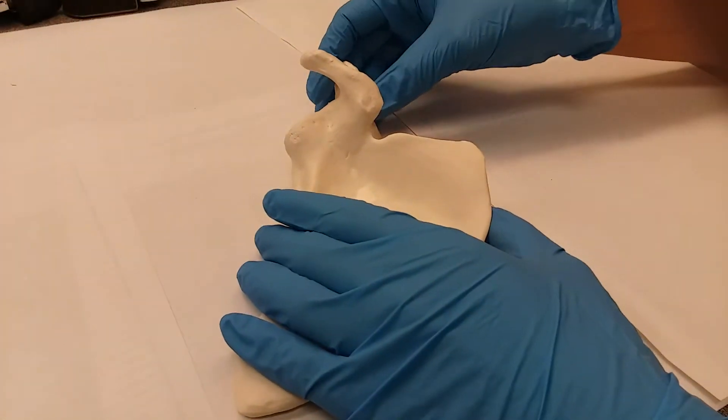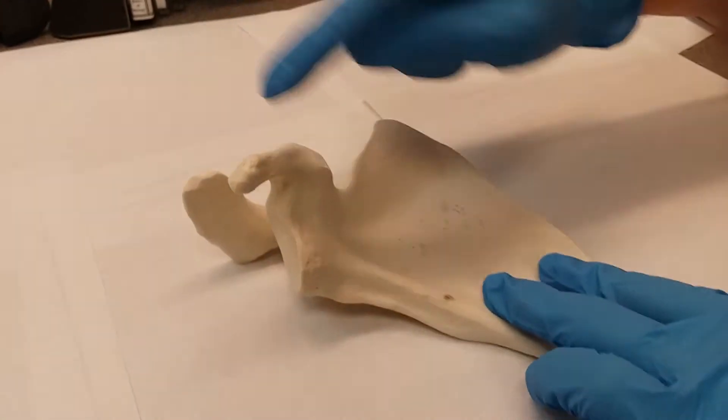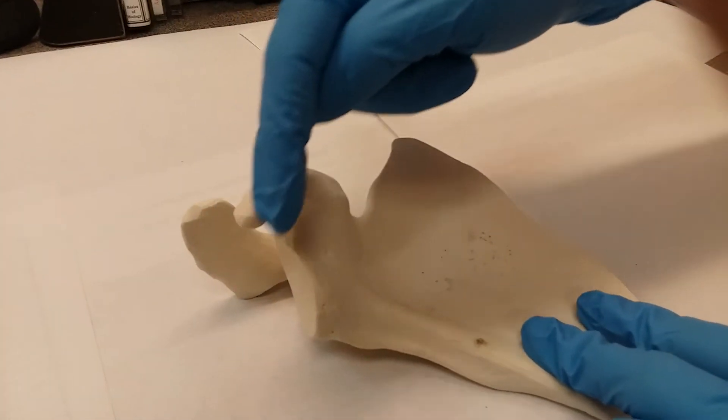The first is going to be your coracoid process. It is this structure right here. It's this little process that's coming out.